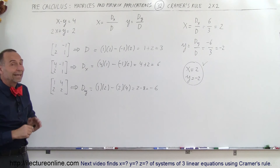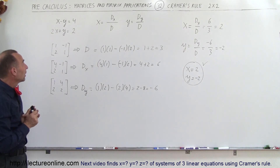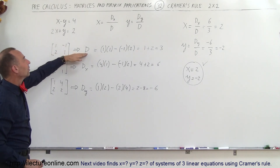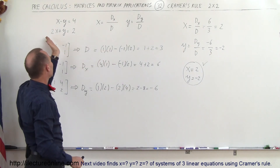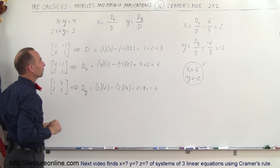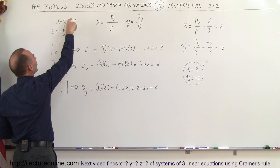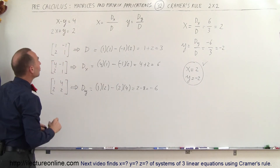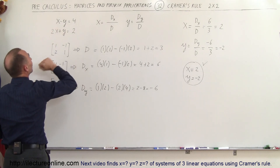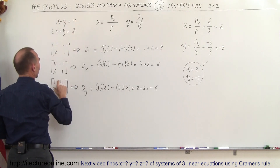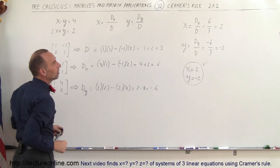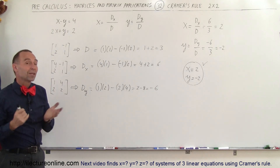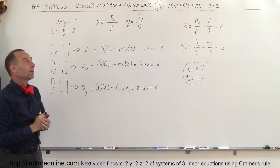A quick review of Cramer's Rule: you take the matrix of coefficients of x and y and find the determinant — the product of numbers along one diagonal minus the product along the other. Then replace the x coefficients with the two constants and find the determinant again — that's D sub x. Then replace the y coefficients with the constants to get D sub y. Finally, divide D sub x by D and D sub y by D to get the values for x and y. A very clever method discovered by Cramer.